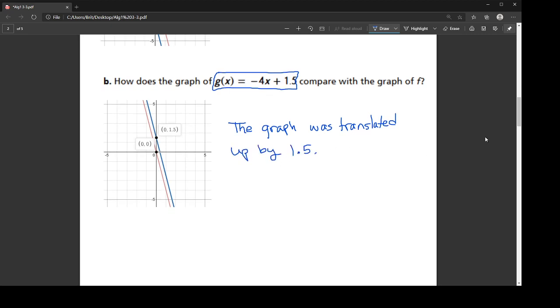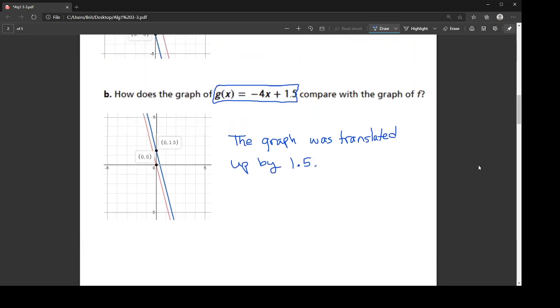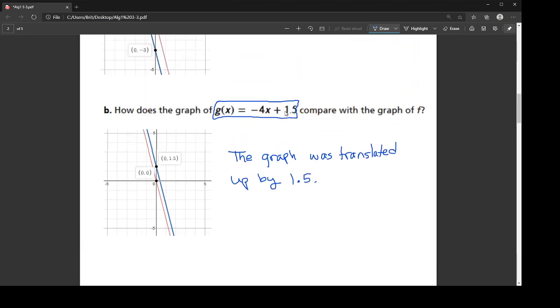So the way that I know that this is vertical, because soon we're going to have horizontal translations, the way that I know that it's vertical is the addition and subtraction is done outside of any grouping symbols around the x. So anything outside of a grouping symbol will always be a vertical change, because you're changing the output.